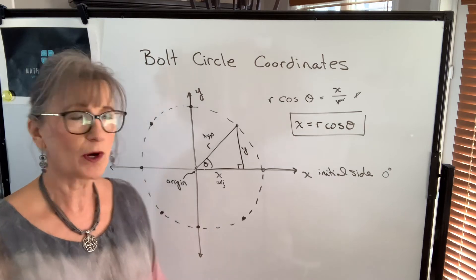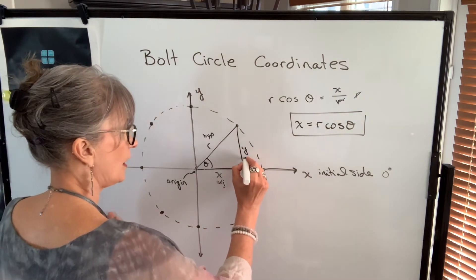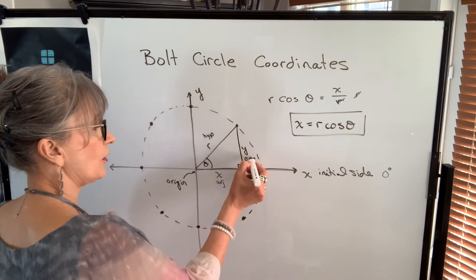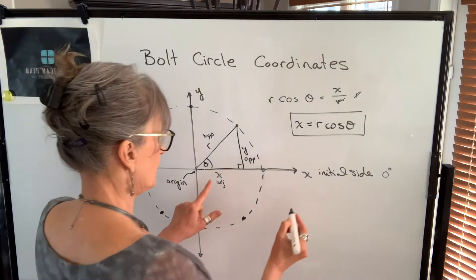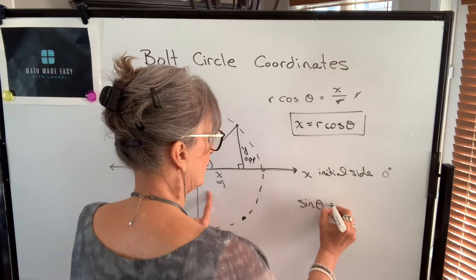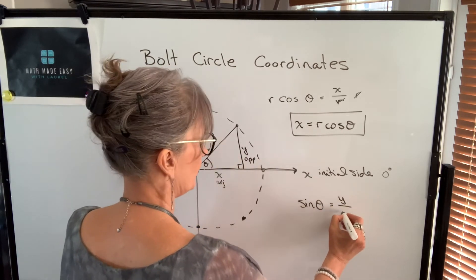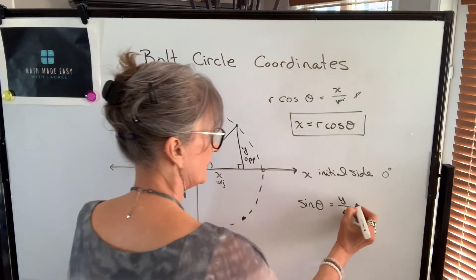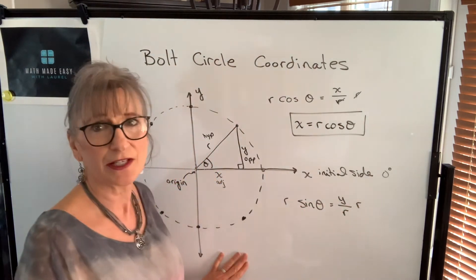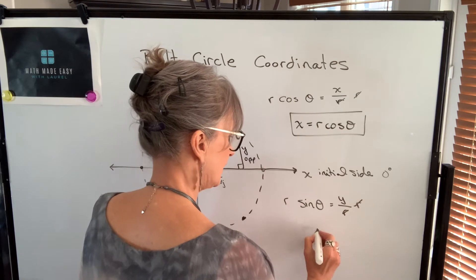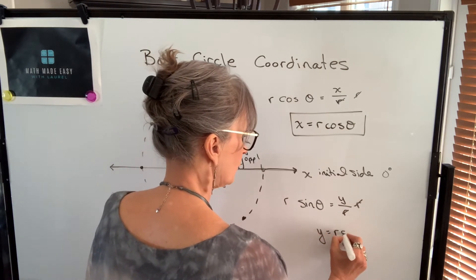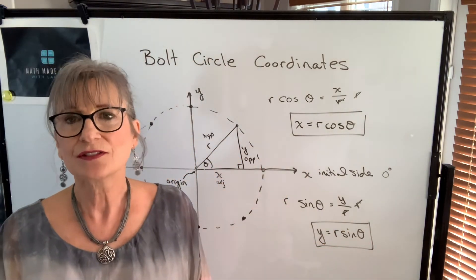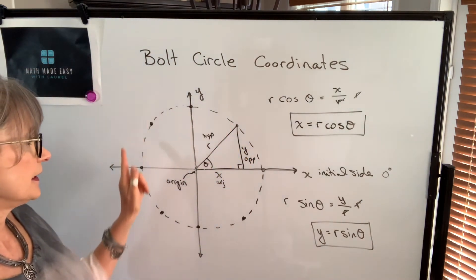I do the same thing to find the y-coordinate. The vertical distance y is opposite the angle, so I'll use the radius and the opposite side, which is the sine function. The sine of my angle equals y divided by the radius. To find y, I multiply both sides by the radius, so y equals radius times the sine of our angle. These are the two formulas we'll use to find the coordinates for each hole.